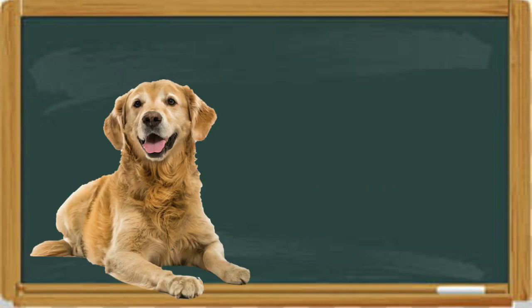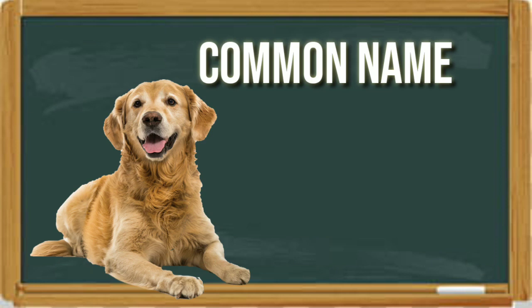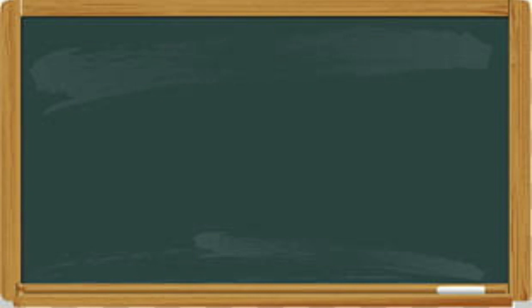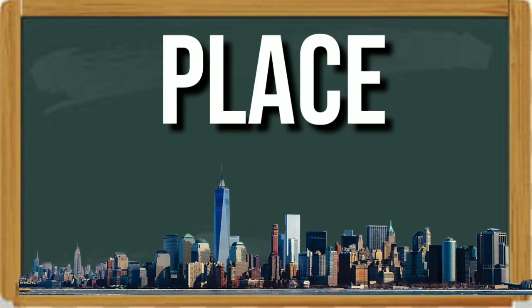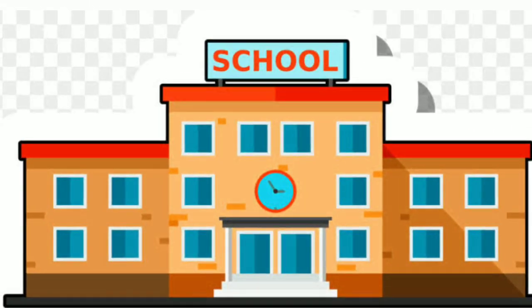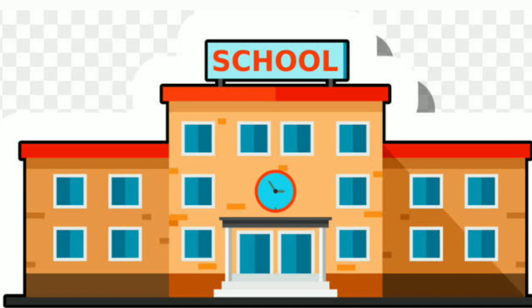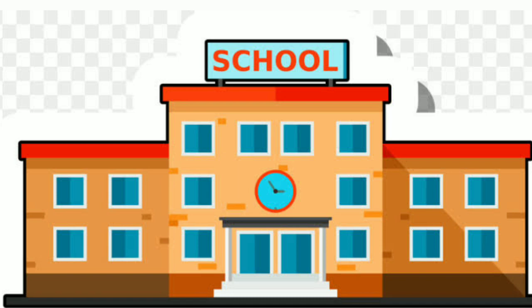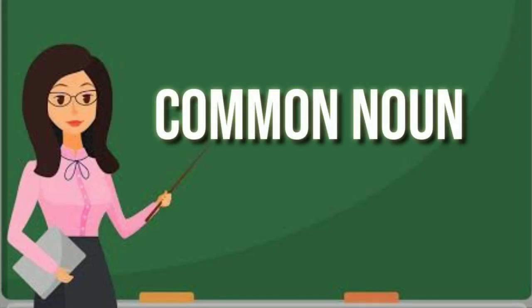Next is dog. Dog is an animal. Dog is a common name, as a dog can be any dog without a specific name. Next is city. City is a place. City is a common name, as a city can be any city without being a specific name. When you go to school, you find the following things in your classroom — these are common nouns.